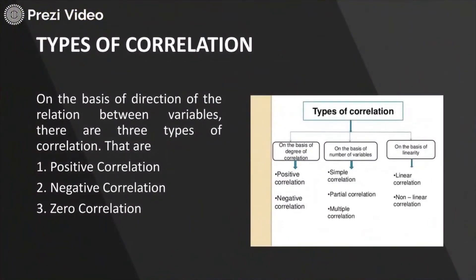When we talk about correlation, let us first understand how they are categorized. On the basis of degree of correlation, they can be categorized into three types: positive correlation, negative correlation, and zero correlation. The correlation value ranges from minus 1 to plus 1 — minus 1, then 0, and then plus 1.